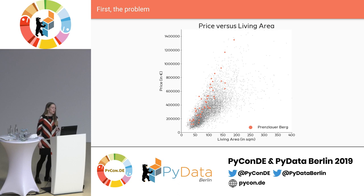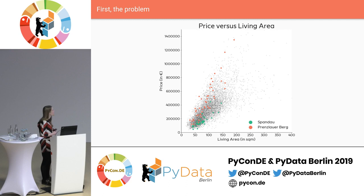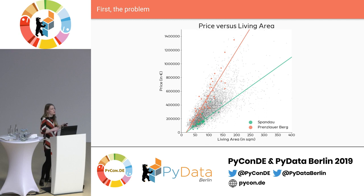If you look at some neighborhoods — this one is Prenzlauer Berg, a very expensive area, considered one of the most expensive in Berlin, as you can see. If you then compare it with Spandau, which is very much in the west of Berlin — many people wouldn't even consider it part of Berlin — Spandau is much cheaper. This explains a bit of the spread. You could easily imagine fitting two different linear models to these, and they would give a relatively good fit.